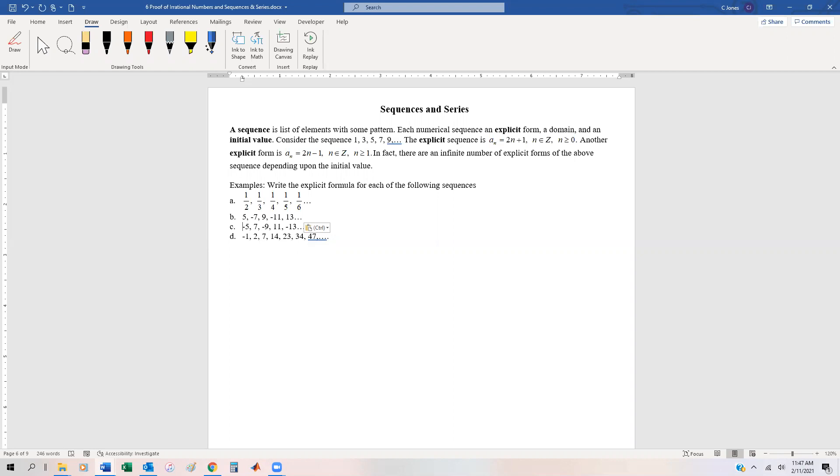A sequence, or at least a numerical sequence for us, is going to be a list of elements with some pattern. And so we're not going to look at any other types of sequence except numerical sequences at this point. Every sequence that we're going to look at has an explicit form, a domain, and an initial value. And so when we say explicit form, we're basically saying that we can write it so that we can access any element which is inside the array of numbers by an index.